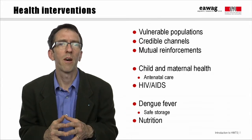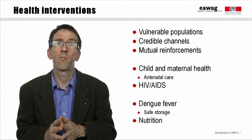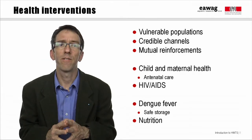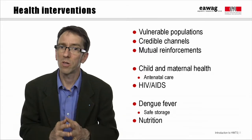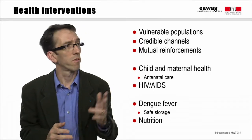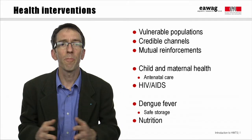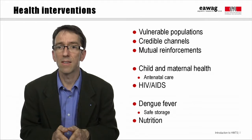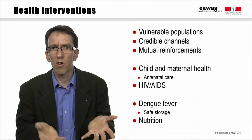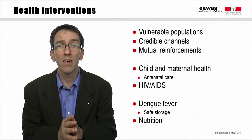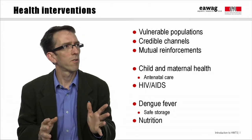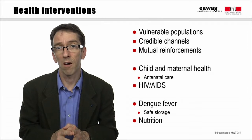We'll look at two kinds of integration with healthcare systems: first, around child and maternal health, taking the specific example of antenatal care; and second, in the context of HIV-AIDS management. There are other potential linkages — for instance, diarrheal disease compounds and is compounded by malnutrition. There are even potential links with water-related diseases like dengue fever, since the mosquitoes that carry the dengue virus like to lay their eggs in water containers, making promotion of sealed household water storage containers a key vector control intervention. But today we'll just look at antenatal care and HIV-AIDS.